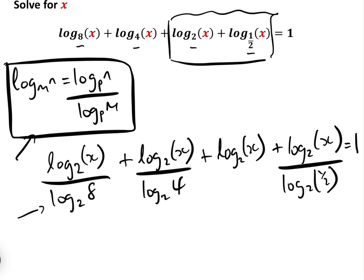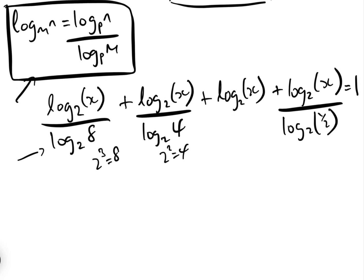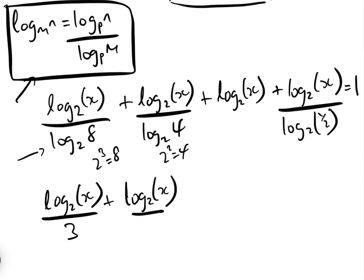Log to the base two of eight is three, because two cubed is eight. And log to the base two of four is two, because two squared is four. So we can simplify this to: log to the base two of x over three, plus log to the base two of x over two, plus log to the base two of x.